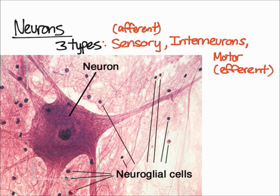Motor neurons send an impulse from the central nervous system to effector organs — for example, your muscles and other glands. We'll go into more specific things about neurons in more depth in the future.